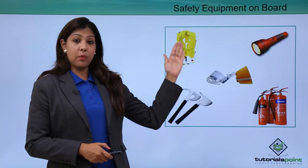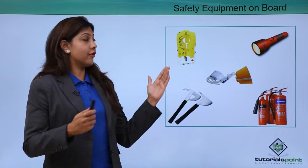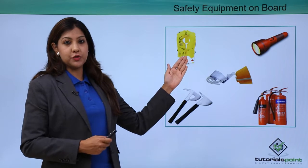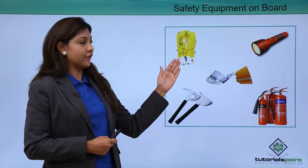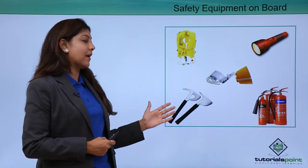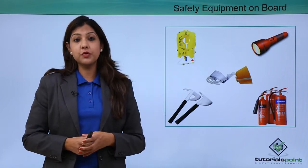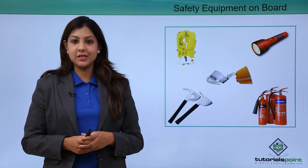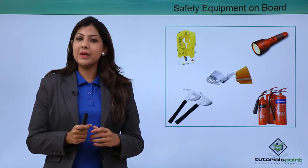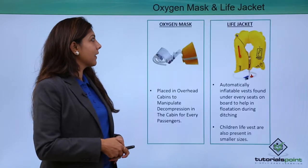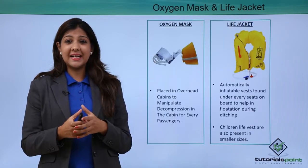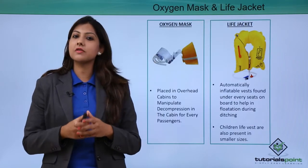Certain safety equipments on board the aircraft include life jackets, flashlights used when there is a power failure, oxygen masks, fire extinguishers, and the axe which is used to break something very hard. Today in this module we look at each of these equipments in detail, starting with the oxygen mask.